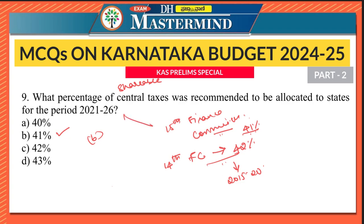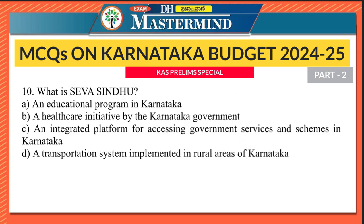The 14th Finance Commission gave recommendations for the period 2015 to 2020, while the 15th Finance Commission covers 2021 to 2026. The 1% reduction is to provide for the newly formed Union Territories of Jammu & Kashmir and Ladakh from the resources of the centre.